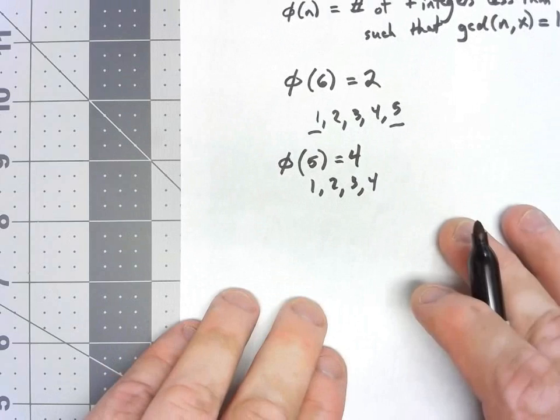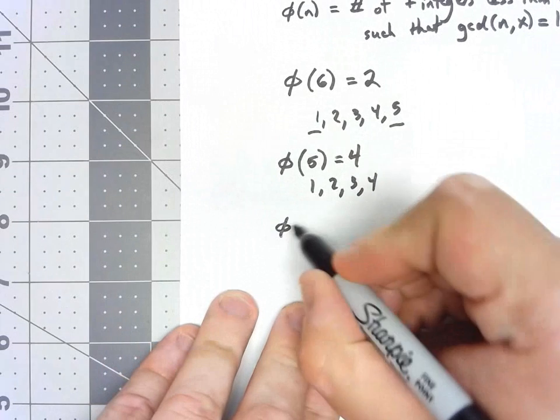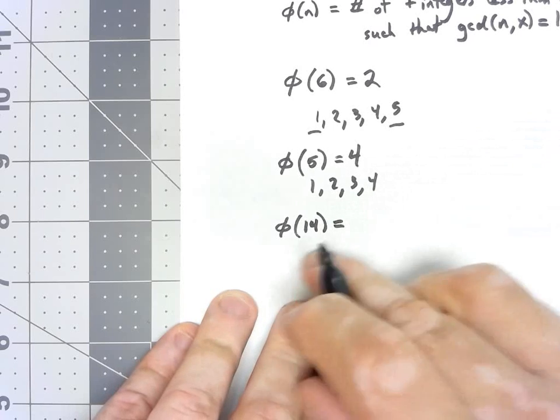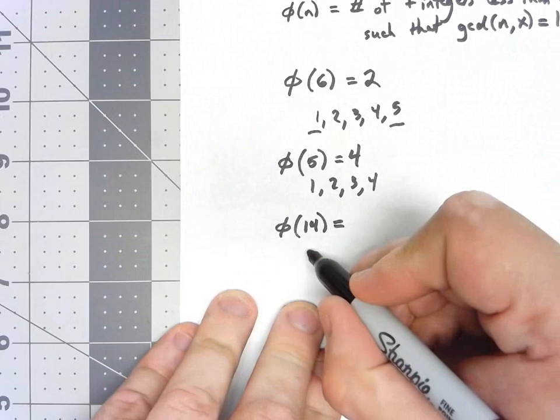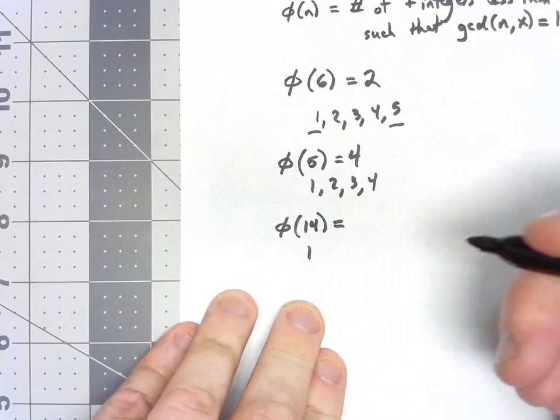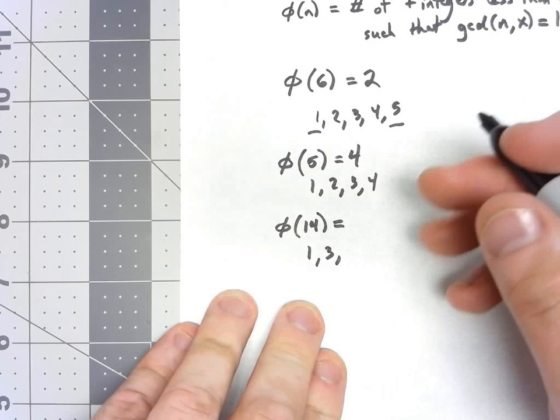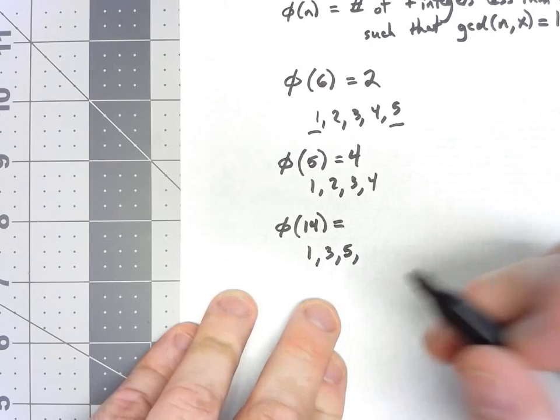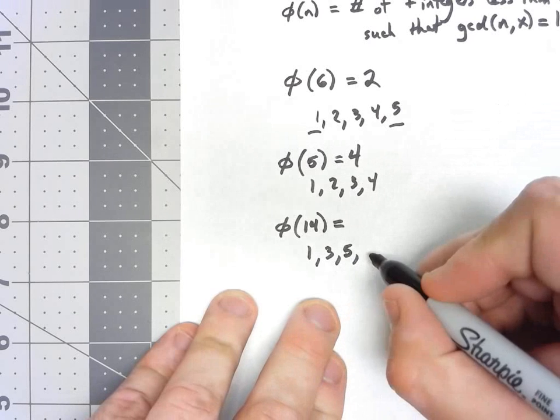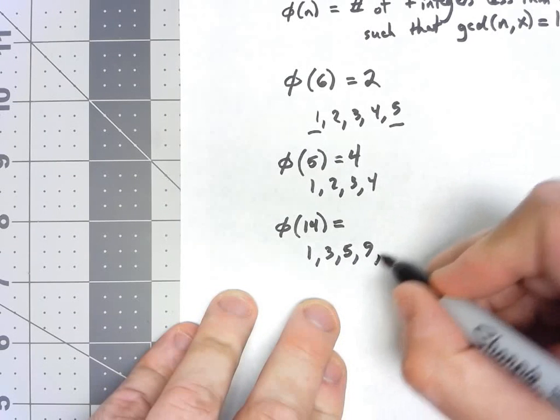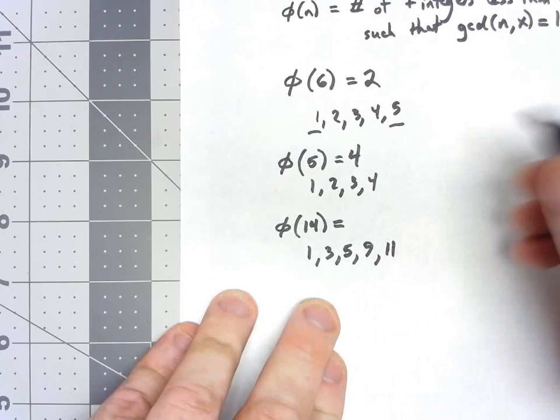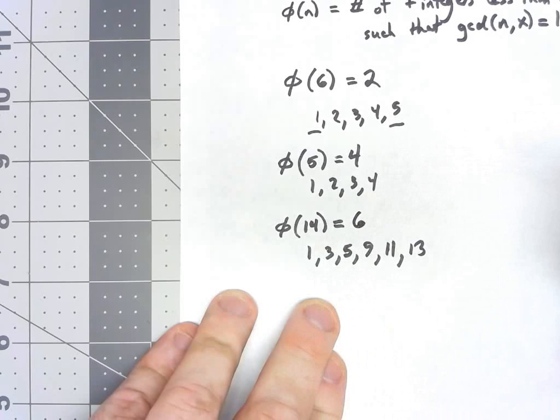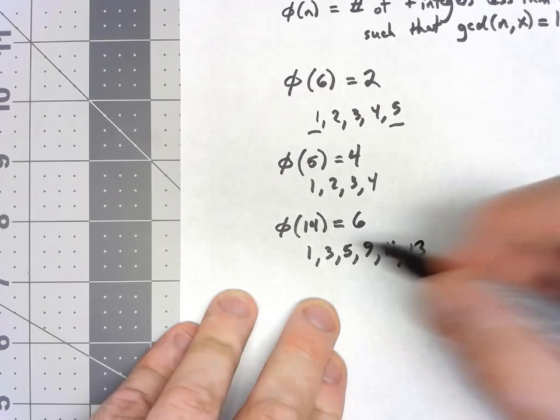One more, let's look at something like φ(14). I'm not going to write out the whole list, but 1 is relatively prime, 2 is not, 3 is, 4 is not, 5 is, 6 is not, 7 is not, 8 is not, 9 is, 10 is not, 11 is, 12 is not, 13 is. So there are six numbers relatively prime to 14 less than it.